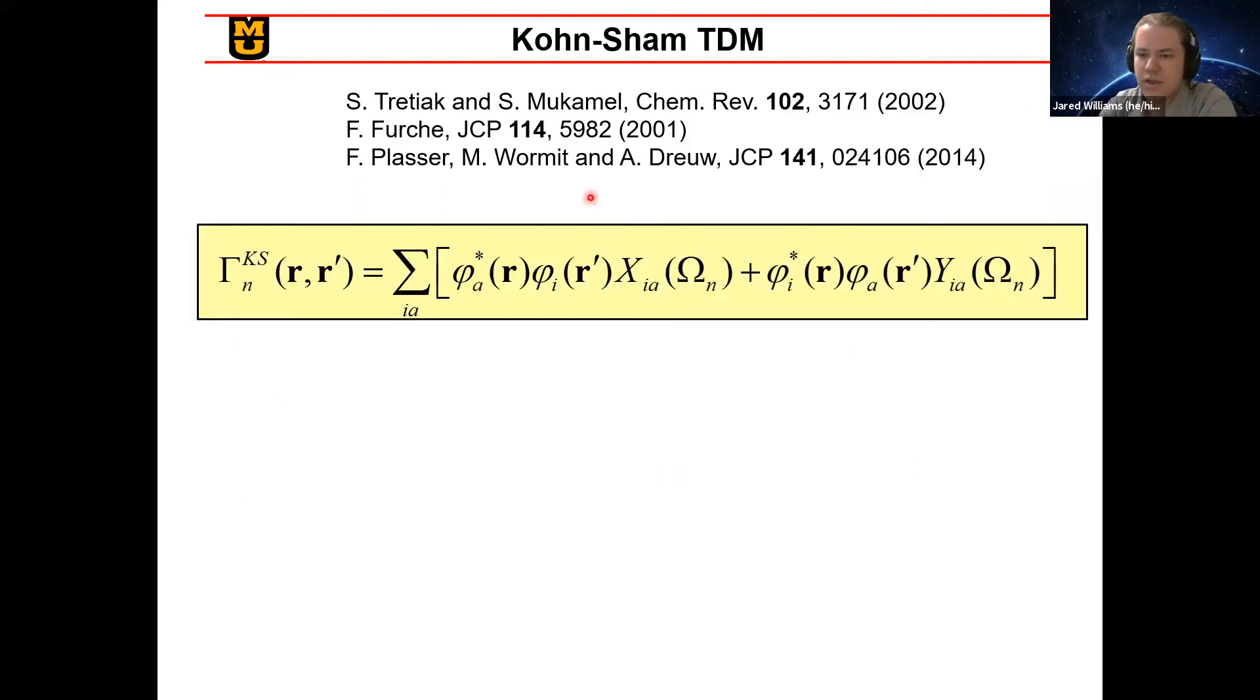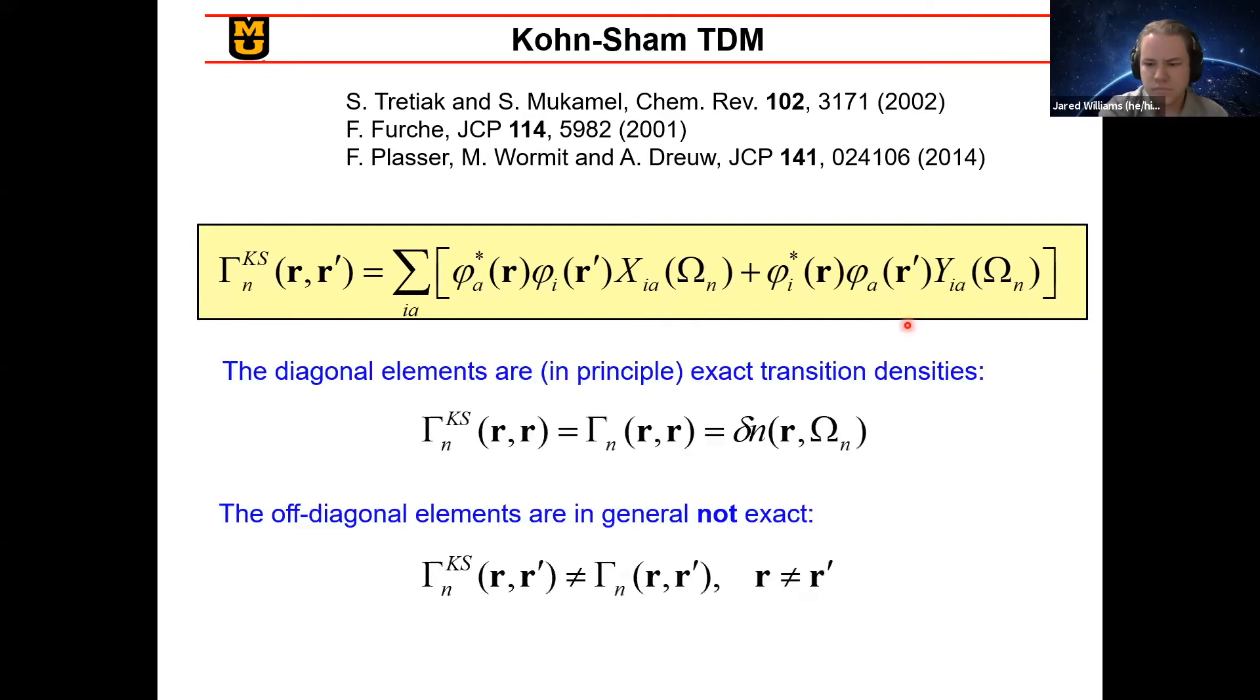And by extension, this can be taken where the only difference between this and the previous expression is the insertion of these primes on two of these Rs to define what we call the Kohn-Sham TDM. And something that's important to note is that when this prime goes away and R equals R prime, these are, in principle, exact transition densities. However, the off-diagonal elements where R and R prime are not the same are not in principle exact.